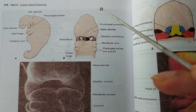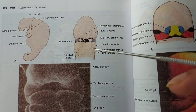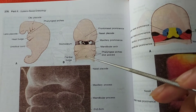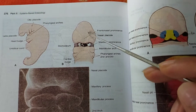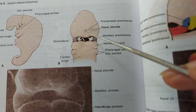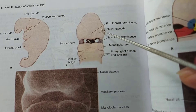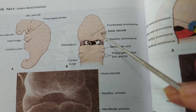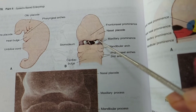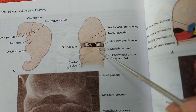Now the embryology of nose and paranasal sinuses. Here we see an embryo at the end of the fourth week. We can see some parts of this embryo: the frontonasal process or prominence, the maxillary process or maxillary prominence, and the mandibular process.